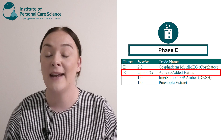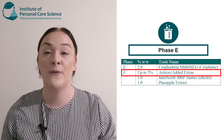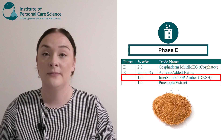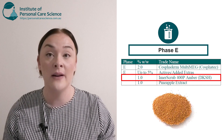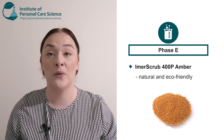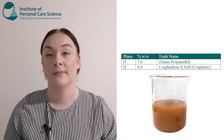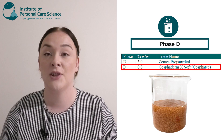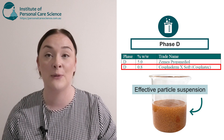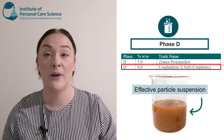For my added extra, I'm going to use a scrub to turn this into a sustainable foaming scrub product. I've chosen the Immerscrub 400P in amber by DKSH, as this is a natural and eco-friendly scrub particle. Another reason I chose this gum is that it has really good particle suspension, which is going to help suspend my Immerscrub throughout the product.